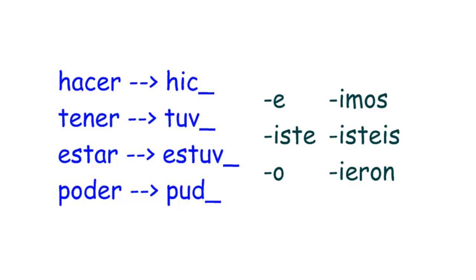So take these stems and add the ending. What did you do yesterday? ¿Qué hiciste ayer? She had my book — ella tuvo mi libro. Where were you at eight o'clock? ¿Dónde estuviste? — that's the tú form.